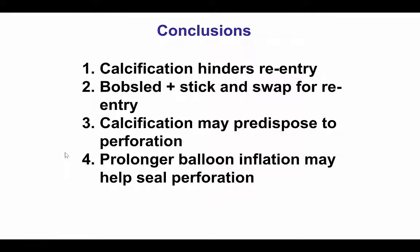In summary, this case shows that calcification can make reentry difficult. We had to perform multiple attempts with the Stingray system using the stick-and-swap technique as well as the bobsled technique. Also, heavily calcified vessels may be more prone to perforation after stent implantation, as happened here. One way to avoid this is to be conservative with stent sizing and with post-dilation. Of course, that can be challenging because sometimes calcified lesions are the ones that require higher-pressure balloon inflation for proper expansion. Finally, in cases of large vessel perforation, prolonged balloon inflation by itself might seal the perforation, obviating the need for a covered stent — which could not be delivered in this particular case.